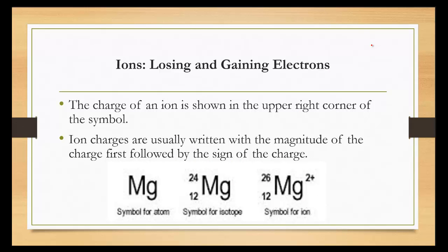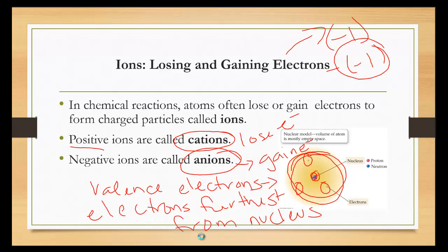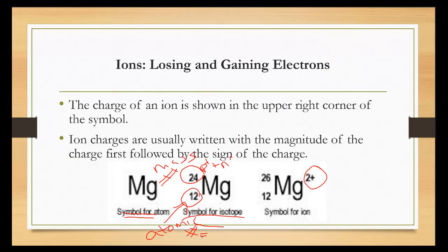The charge of an ion is shown on the upper right-hand corner of the symbol. Here's the symbol for a specific isotope — this is the mass number up here, which is the number of protons and neutrons added together in the nucleus. This down here is the atomic number, which is the number of protons. Up here we can determine the charge and how many electrons there are, because the charge is equal to the number of protons minus the number of electrons.